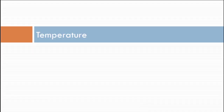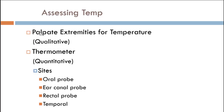When we look at temperature, we have qualitative assessment — just palpating extremities, touching someone's arm or leg or feeling their forehead. The reason you'd be feeling their arm or leg is to check if it's cool or warm based on blood flow. You can also do a quantitative assessment and use a thermometer, which is how we normally think of body temperature measurement.